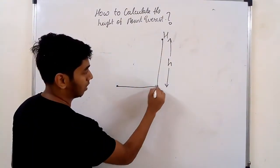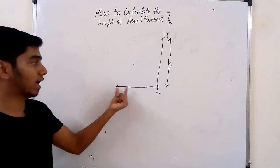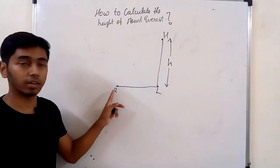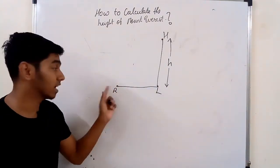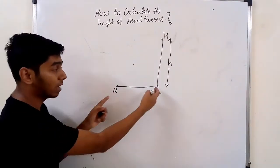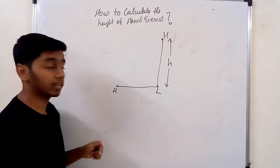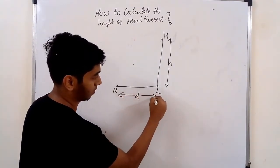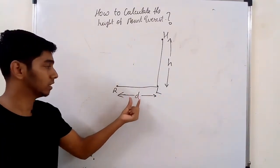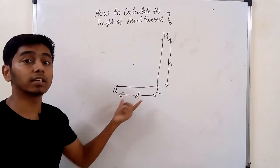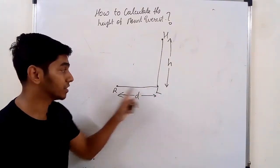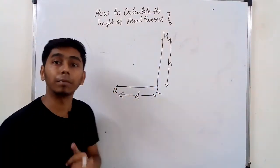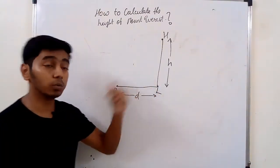Now let's say I am standing over here — Raj is standing over here — at some particular distance, let's say D. This distance is already known; I can measure the distance between where I am standing and the building using a measuring instrument.